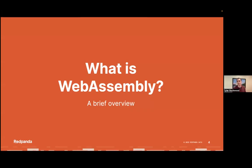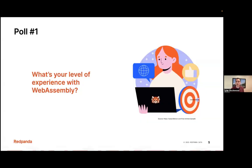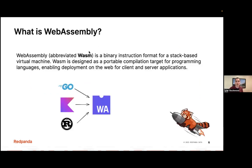So what is WebAssembly? WebAssembly, also known as WASM, is a binary instruction format for a stack-based virtual machine. It's designed to be a compilation target for many different languages. So you can take all of your favorite languages such as Go, Kotlin, or Rust and compile them down to WebAssembly, and then you can run them really anywhere. Initially it was built for the web and for the browser, but today they're being used in message brokers, server applications, and function-as-a-service platforms.